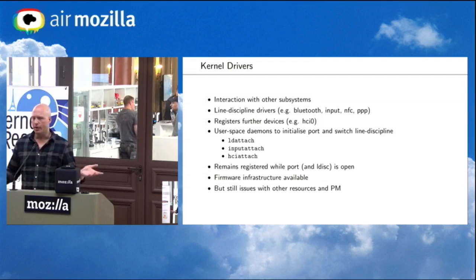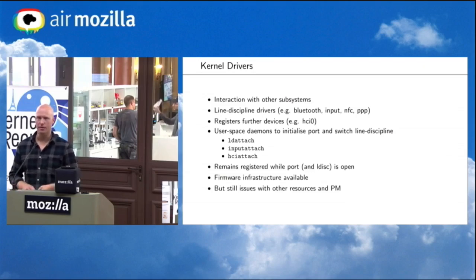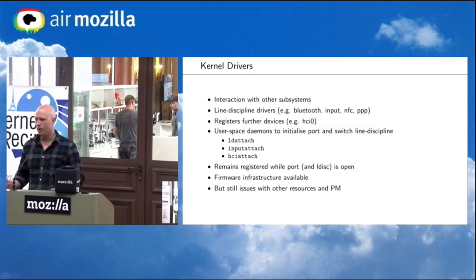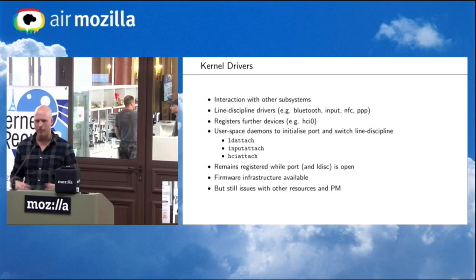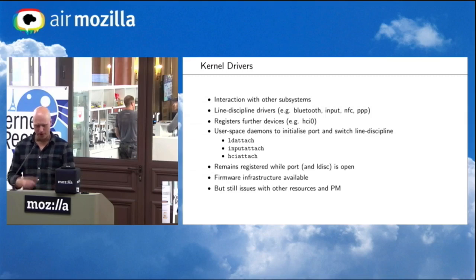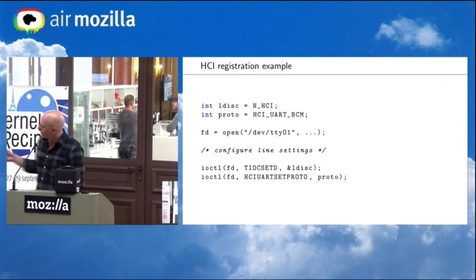Those line disciplines would register further class devices which you then use to actually access the hardware, abstracting some of the transport. For Bluetooth, the line discipline would register an HCI zero device. We have a number of user space daemons written to manage setting up these line disciplines, and they typically need to be running as long as you want to access the underlying hardware. HCI attach is the tool you would use to set up a Bluetooth connection. The line discipline drivers give you access to the kernel's firmware infrastructure, but you may still need to access GPIO to toggle a reset line.